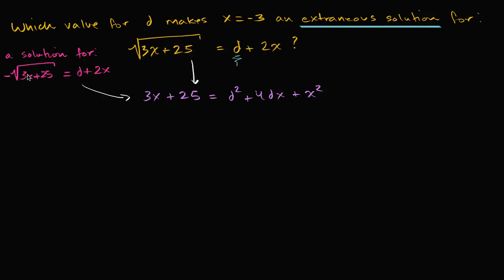So when they say which value for d makes x equals negative three an extraneous solution for this yellow equation, that's the same thing as saying: what value of d makes x equals negative three a solution for the negative version of the equation? If it's a solution for this negative version, it's going to be an extraneous solution for the original. Let's think about which value for d makes x equals negative three a solution for that.